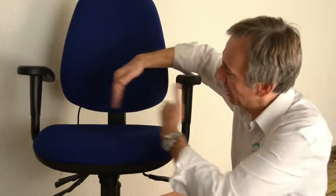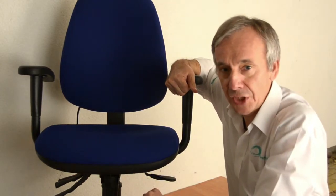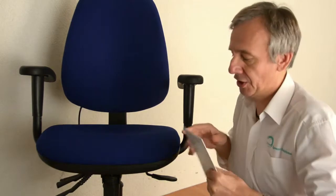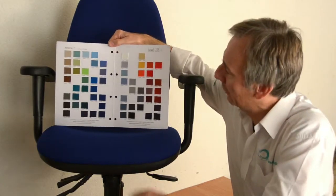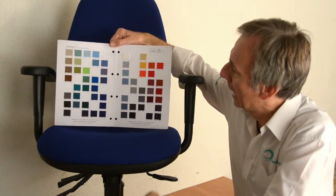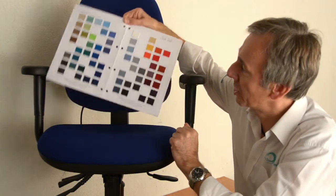The seat on the Solar Chair is very well proportioned. A waterfall front takes the pressure off the back of your legs. A wide range of colours are available to match your corporate identity. There are six different swatch cards, so we can always get the ideal match.